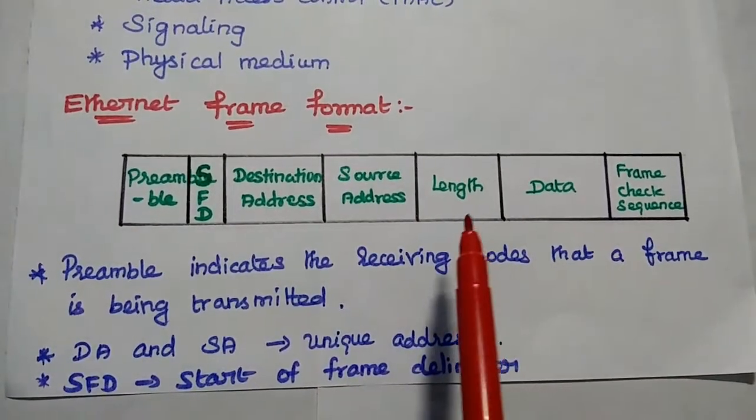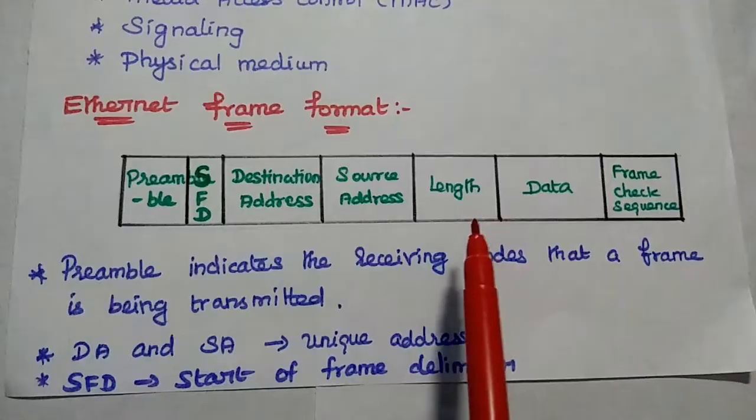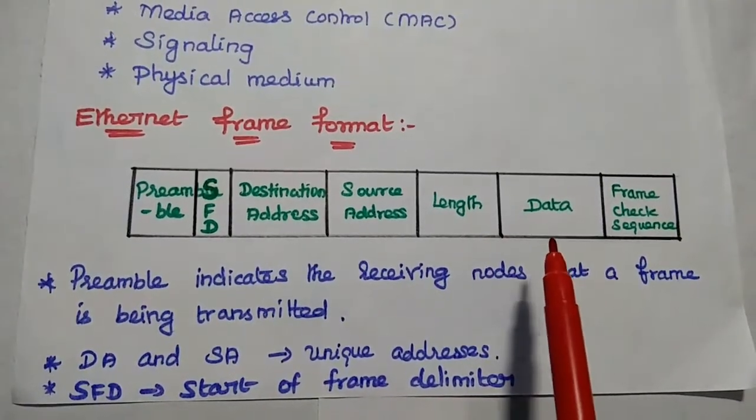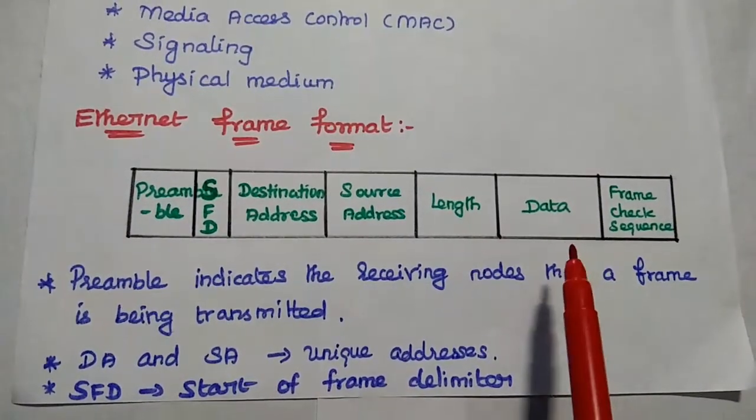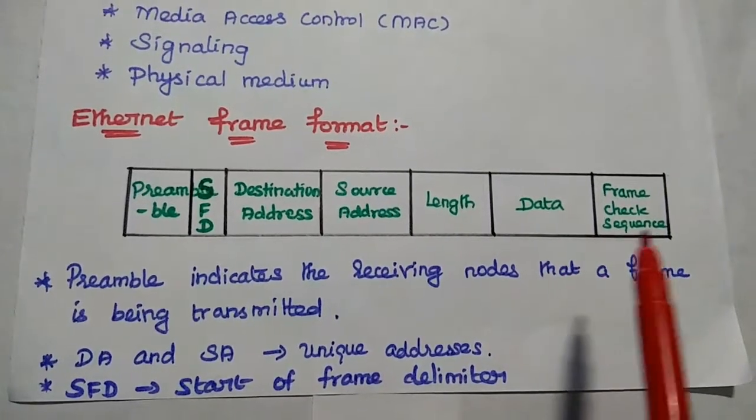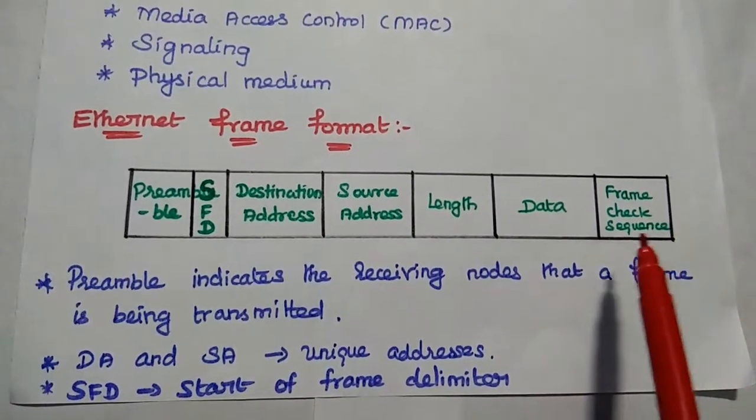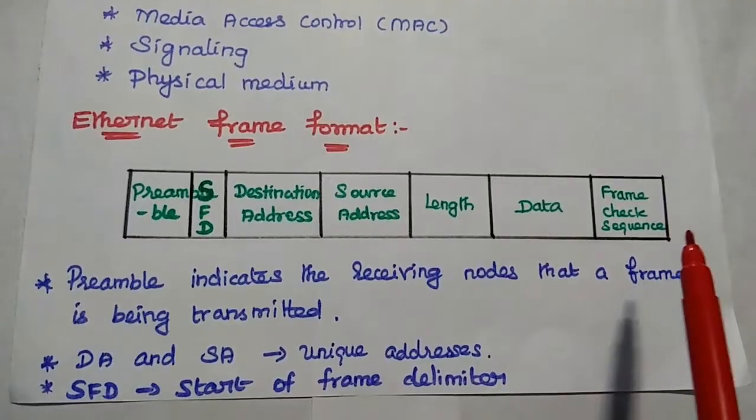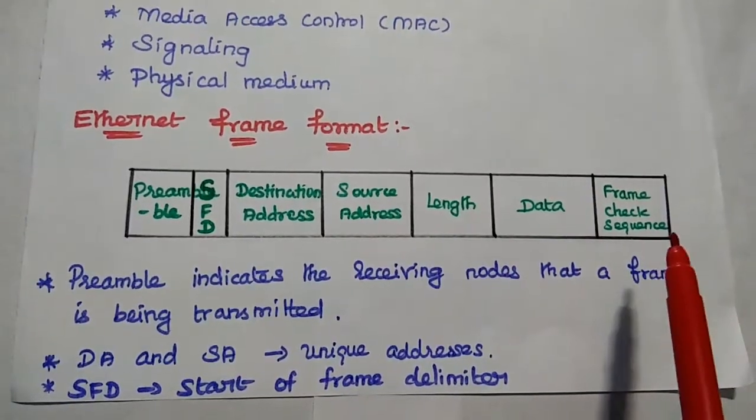Length represents the length of the data or type of data. Next one is data, it is the actual information to be transmitted in the network. The last one is frame check sequence. It is the error checking sequence.